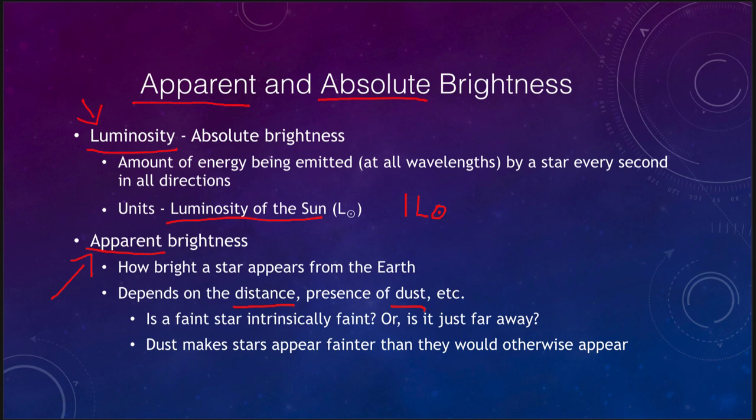Since apparent brightness depends on distance and dust, there are some important questions. Is a faint star really faint, or is it a bright star that is just very far away? Also, dust can make stars appear fainter than they otherwise would, potentially making a star look further away than it actually is if we don't account for the dust in the way.